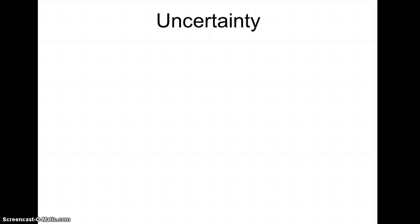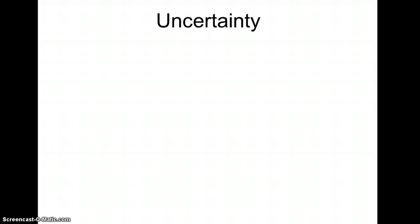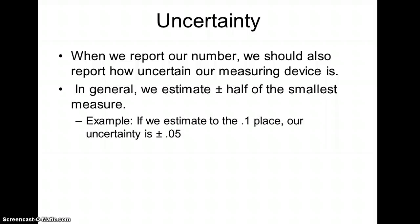Now, uncertainty. Not only does our last digit reflect an estimate, but it tells us where we've made that rounding if we add uncertainty. When we report a number, we're going to indicate how uncertain the measuring device will be. In general, we estimate plus or minus half of the smallest measure. For example, if I estimate something to the .1 place, like in the case of those graduated cylinders, I'm going to need to add an uncertainty that is plus or minus half of that tenth place. So plus or minus .05.